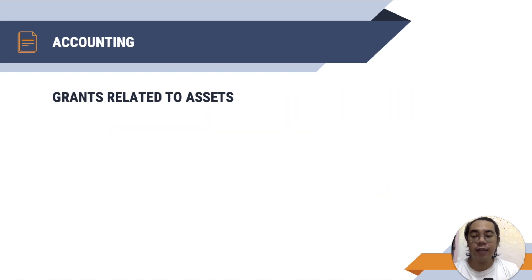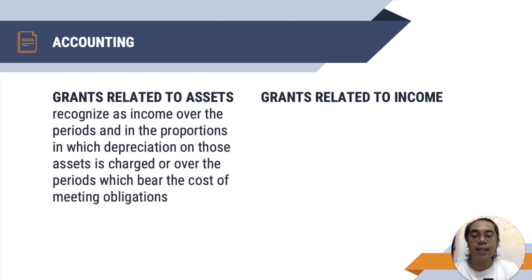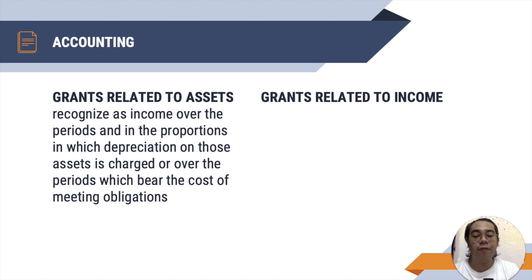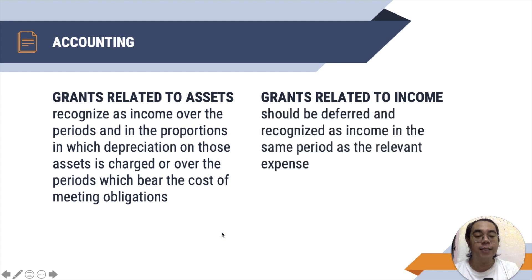To account for grants related to assets, you recognize them as income over the periods and in the proportions in which depreciation on those assets is charged, or over the periods which bear the cost of meeting the obligation. For example, if you depreciate the asset for five years, then the income related to the government grant is to be recognized over five years as well. For grants related to income, it should be deferred and recognized as income in the same period as the relevant expense — matching concept. Here you match the income to depreciation, and there you match the income to the relevant expense.